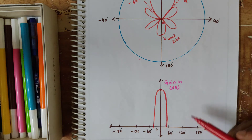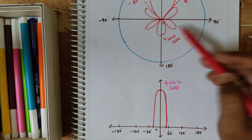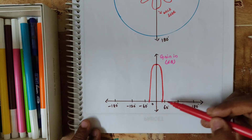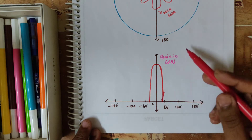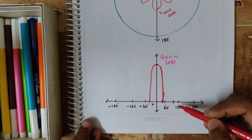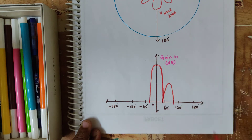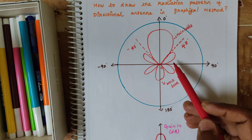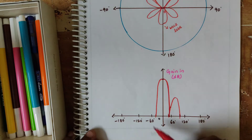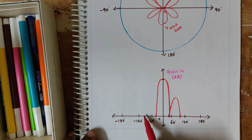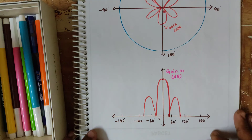Now we move on to the side lobe. The side lobe will be starting from 45 degrees and ending in 90 degrees. It will start here and end at 90 degrees. Assuming this is 90 degrees, I plot a small mountain like this, and the same way we are having the opposite side lobe at minus 90 degrees, plotting a mountain like this.